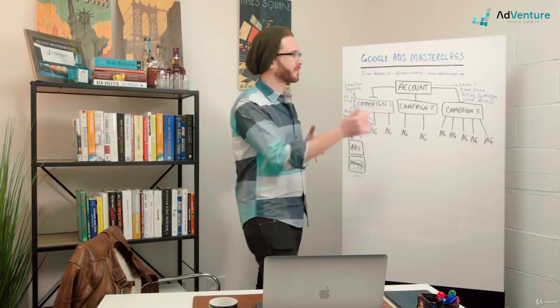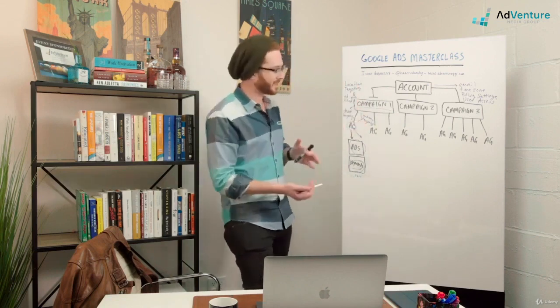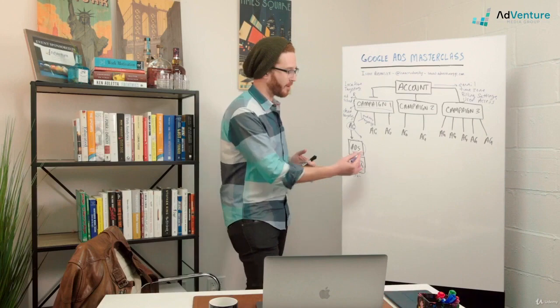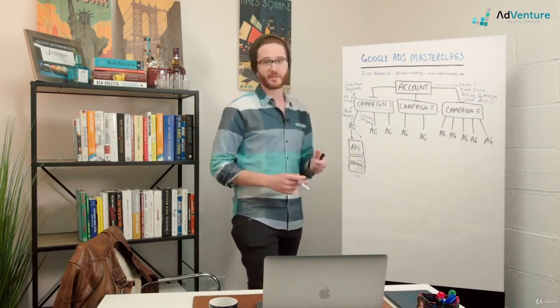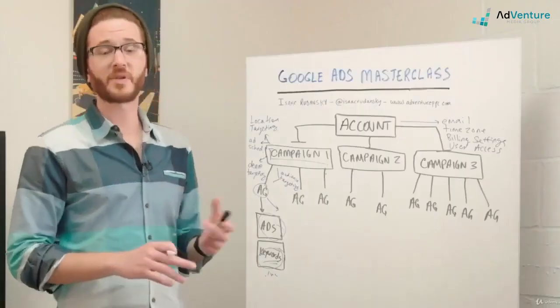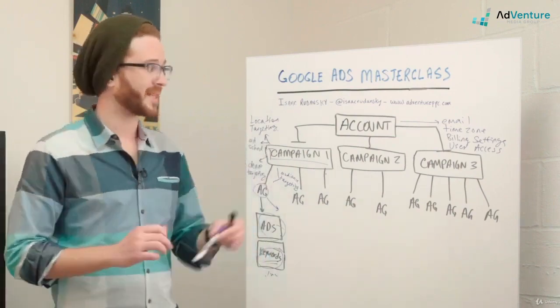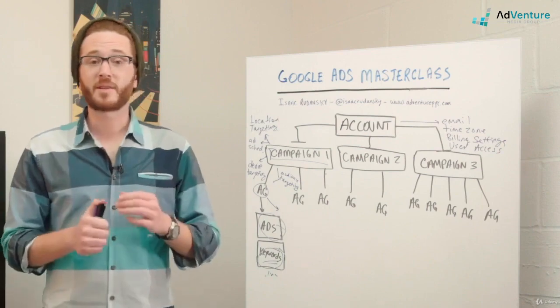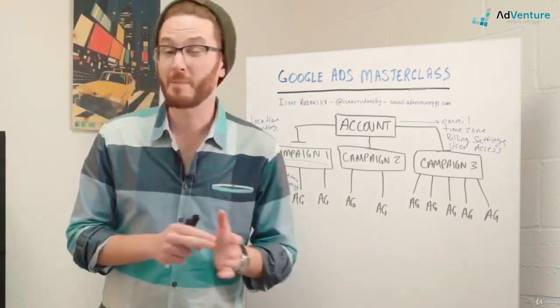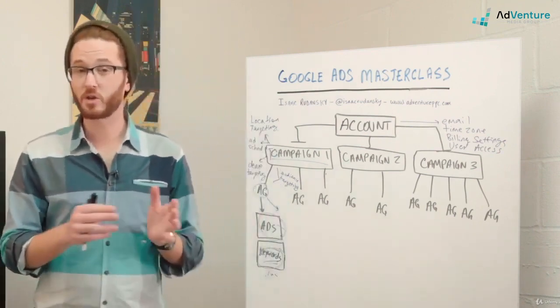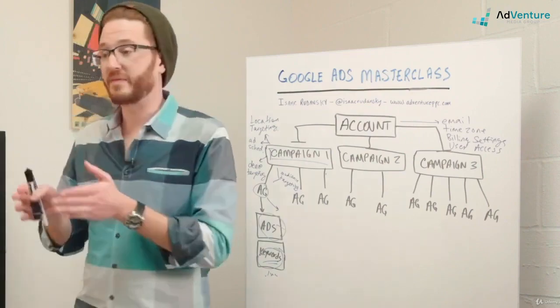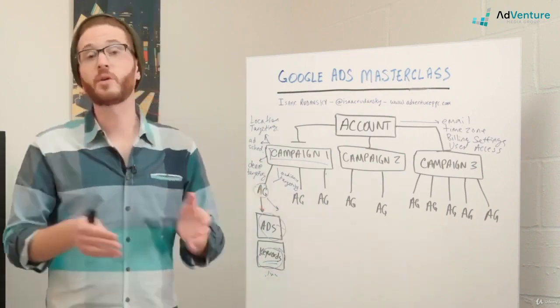Account, campaigns are inside account, ad groups go inside campaigns, ads and keywords go inside ad groups. You could have multiple ads and multiple keywords inside every single ad group. There are settings at the campaign level, some settings at the ad group level, some settings at the account level. But it's important to remember that there are a couple of different reasons why we might want to structure a campaign in a certain way. One is to control specific settings and the other is for our own internal organization.